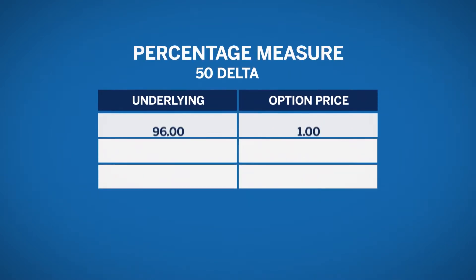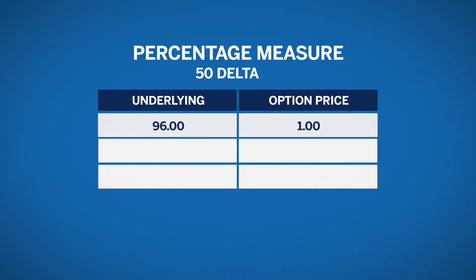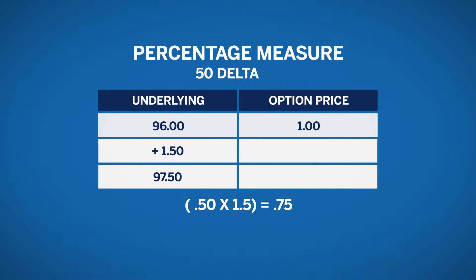Assume we have a call option priced at 1. It has a 0.50 delta, which means whatever the change of the underlying future is, the option will move by 50% of that change. If our underlying futures product moved from 96 to 97.5, this is a 1.5 point move. So our option premium will now change by 50% of 1.5, or 0.75, making the option's new price 1.75.